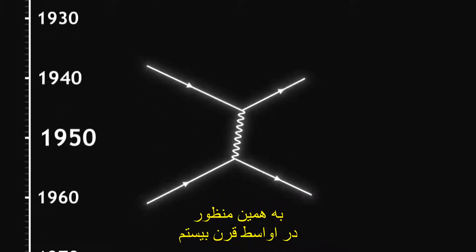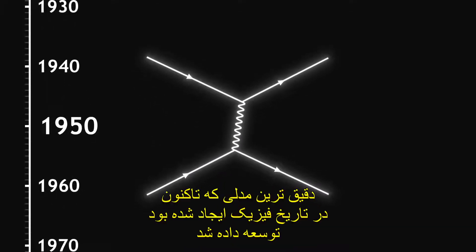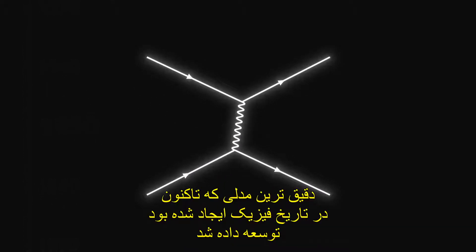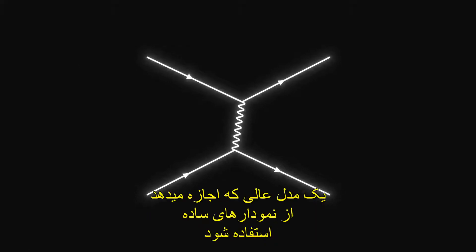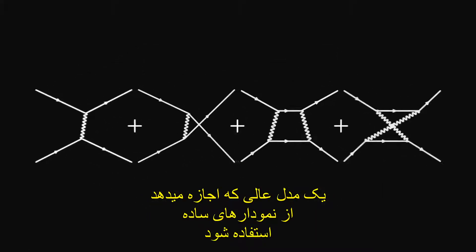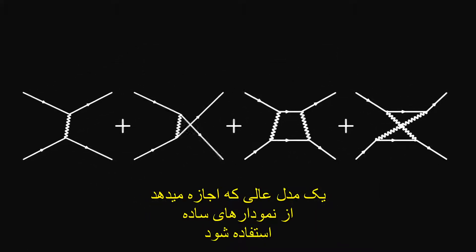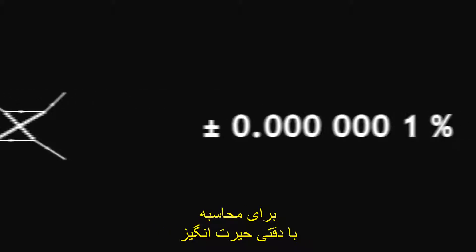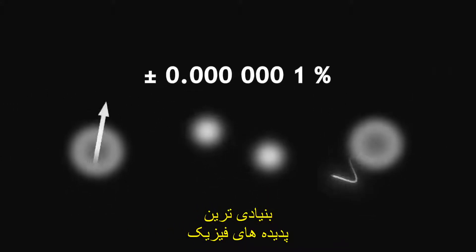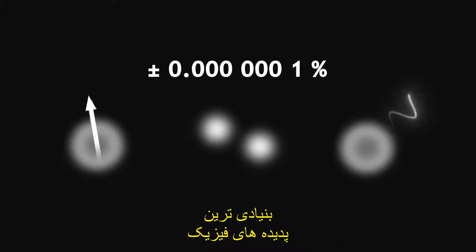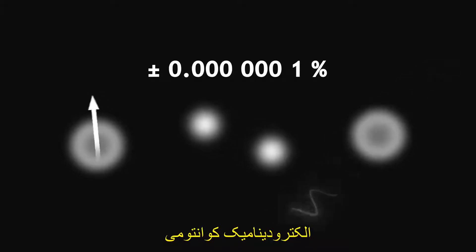To this end, in the middle of the 20th century, the most precise model ever created in the history of physics was developed — an elegant model which allows the use of simple diagrams to calculate with astounding precision the most fundamental phenomena of physics.